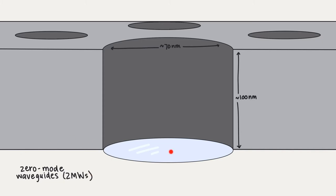A ZMW is a chamber just like this one, and these chambers are holes that are approximately 70 nanometers in diameter and approximately 100 nanometers in depth in a super thin metal film, and that's pretty freaking tiny. At the bottom of each of these chambers is a clear glass substrate.